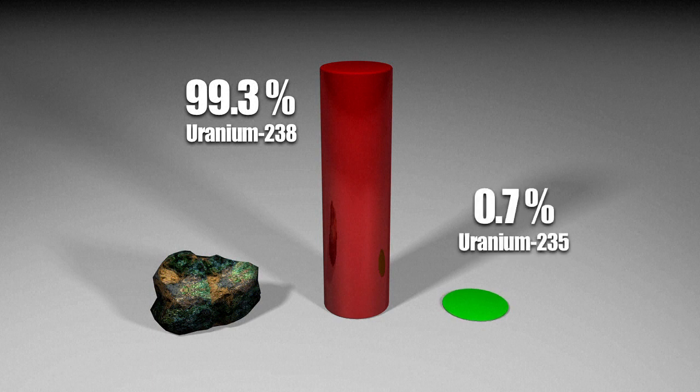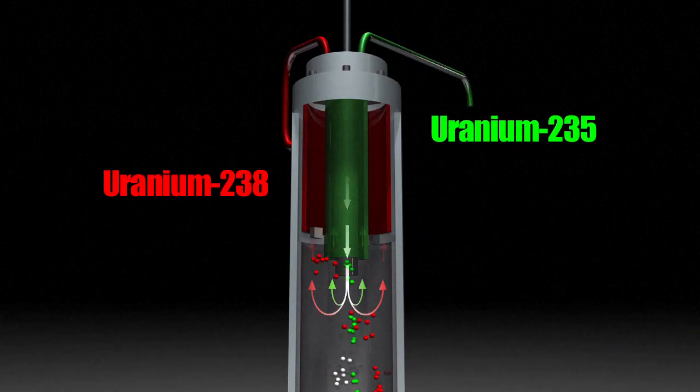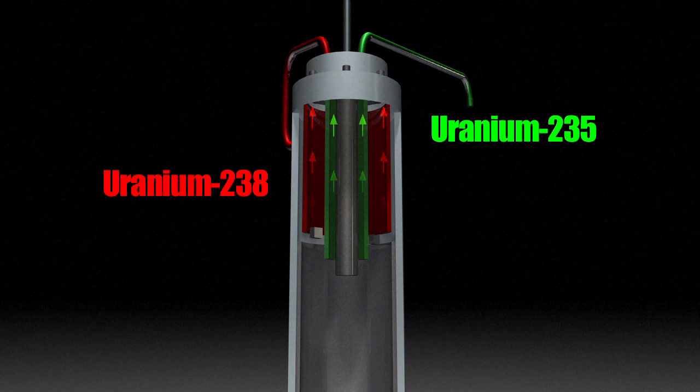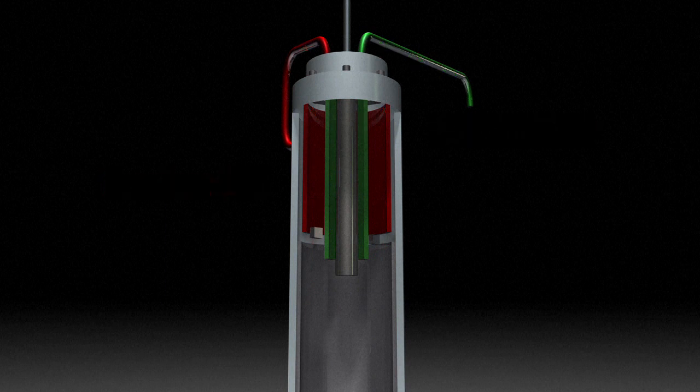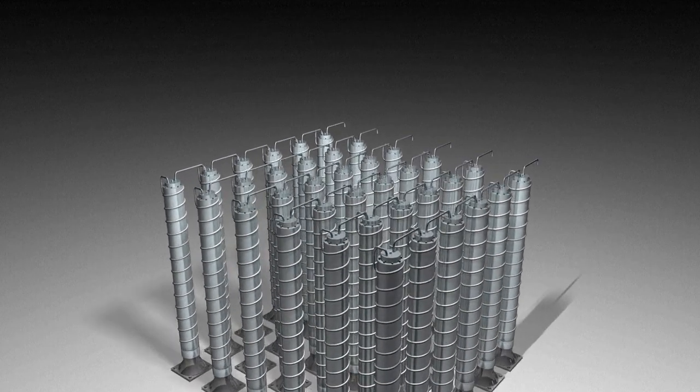Only the latter is used to produce nuclear energy. To separate the two, centrifuges are used. The heavier U-238 is discarded and the lighter U-235 is re-injected into the next centrifuge. Many centrifuges are needed to obtain a significant amount of usable Uranium-235.